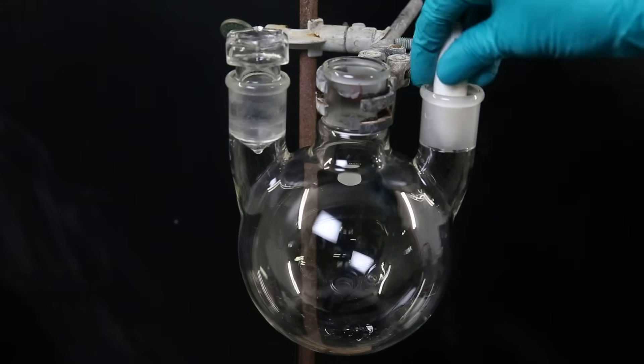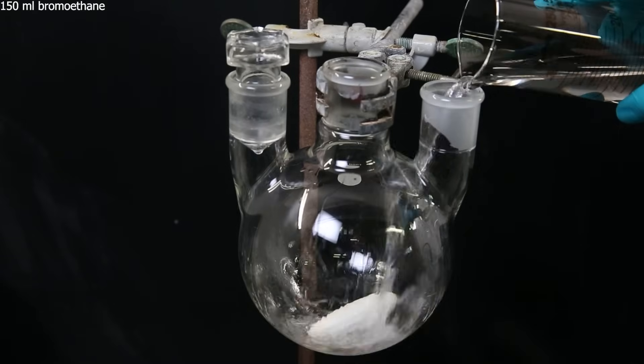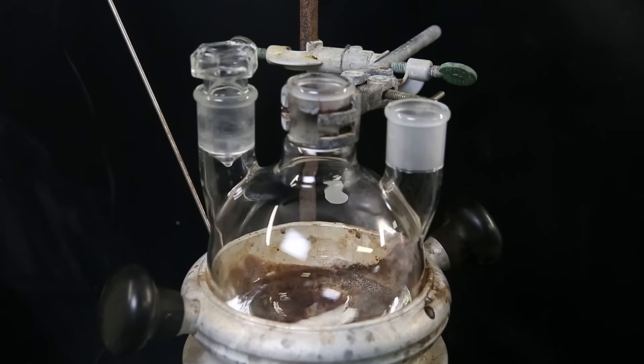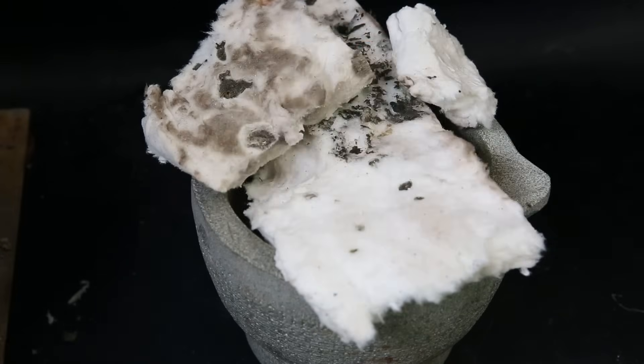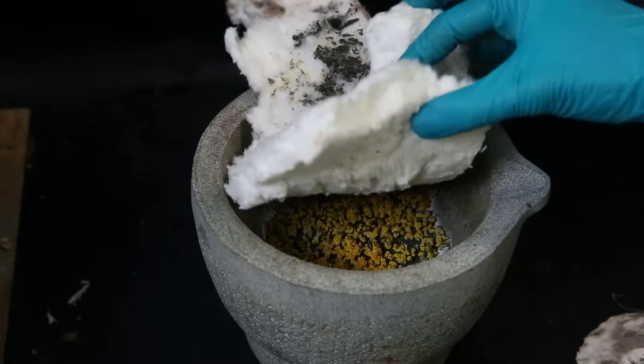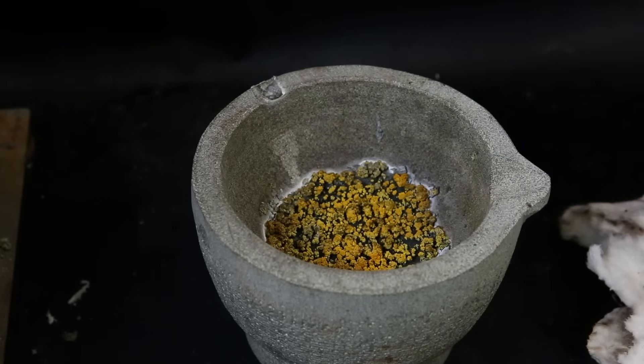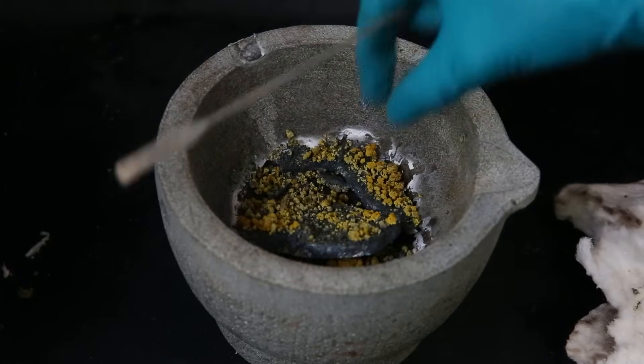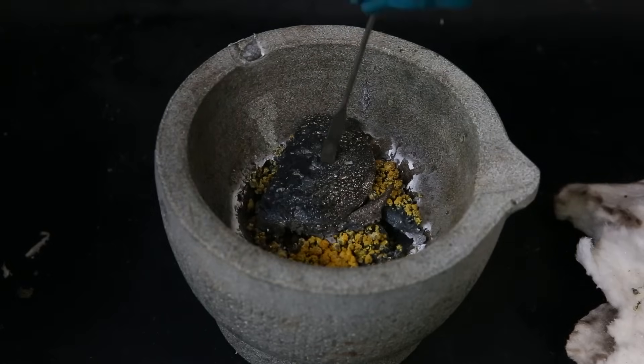I set up a large three-neck flask and add in a big stir bar. I then add 150ml of bromoethane and move the flask to a heating mantle. Now I come back to the cooled down alloy and it's a black mass with some crumbles of yellow and orange oxidation. I lift it with a spatula and the alloy breaks right away.